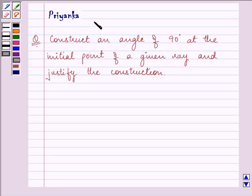Hi, how are you all today? My name is Priyanka. The question says: construct an angle of 90 degrees at the initial point of a given ray and justify the construction.